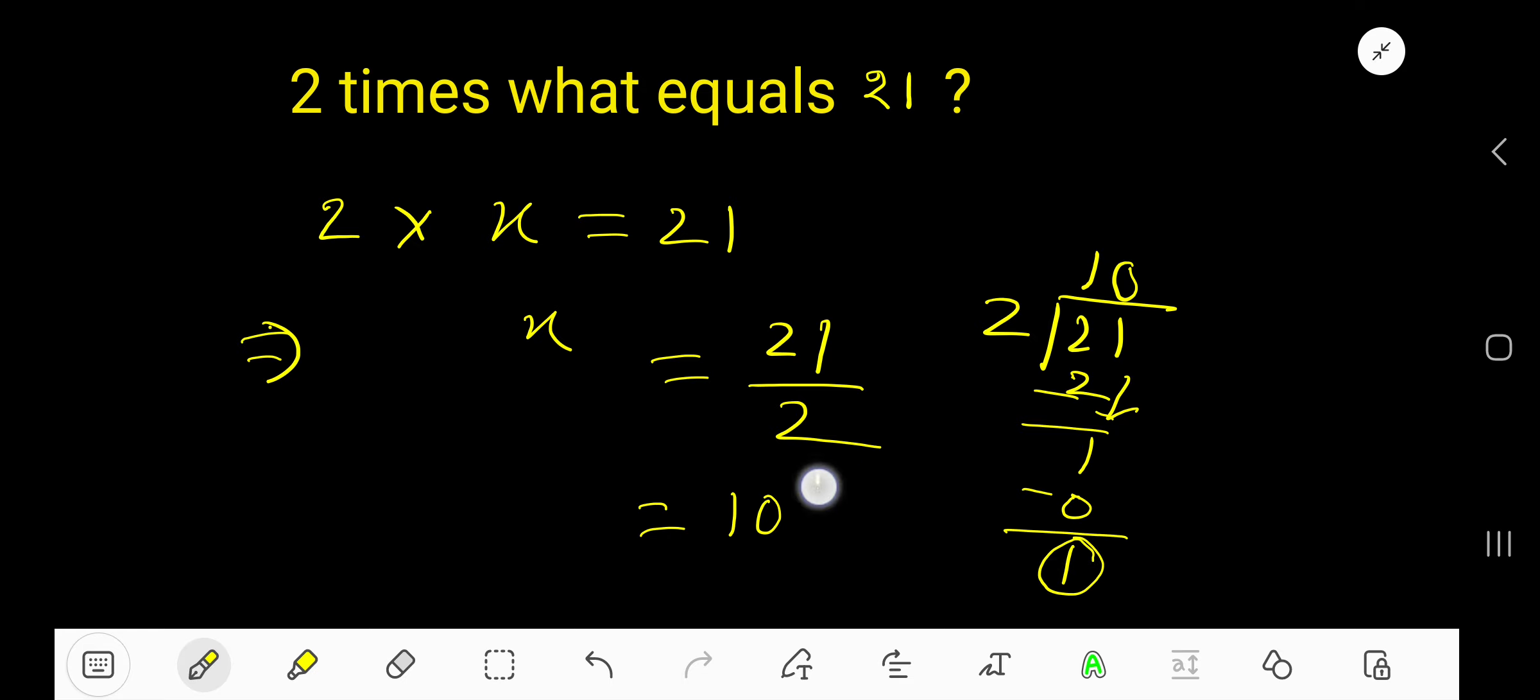The remainder 1 will be your numerator and 2 will be your denominator: 10 and a half. That is, 2 times 10 and a half equals 21.